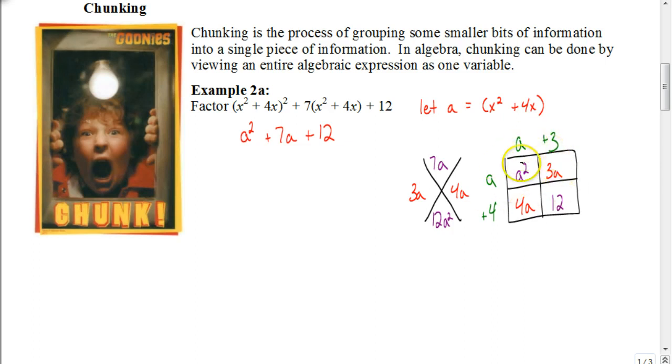Double check and make sure this works out. a times a is a², a times 3 is 3a, 4 times a is 4a, and 4 times 3 is 12. So I know that I factored that down properly. It's (a + 3) times (a + 4).